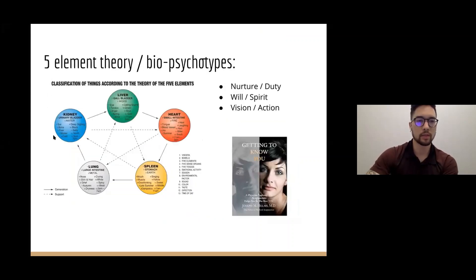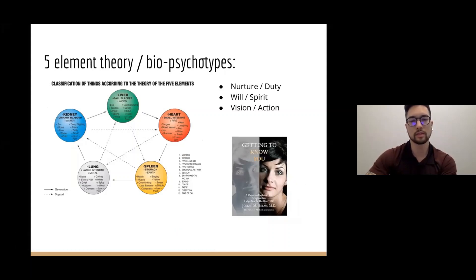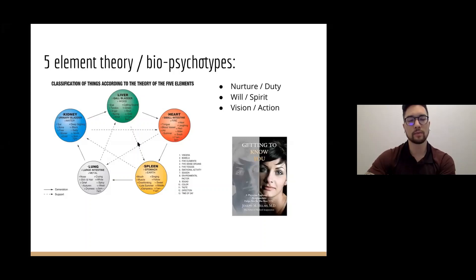In acupuncture training we discuss the five element theory, which takes a more functional medicine-based approach where you have different types of individuals. Dr. Helms wrote a book about knowing yourself and knowing your patients on a deeper level — what people gravitate to, if they're more of a kidney type of individual and what problems they're prone to, versus someone with a fiery personality who might be more of a heart type. These correspond to various meridians, and over time clinically you can read people quickly based on their history to prevent incoming medical problems.